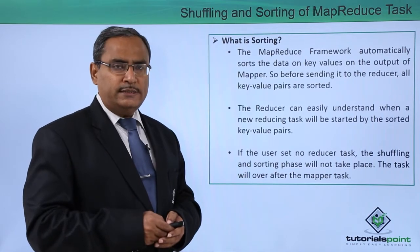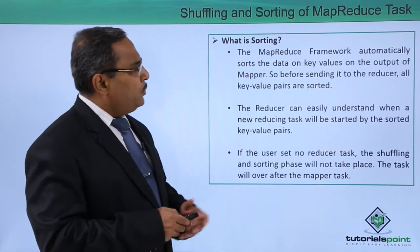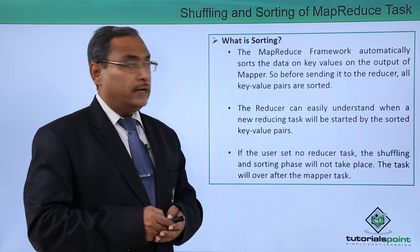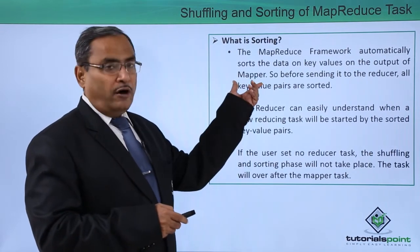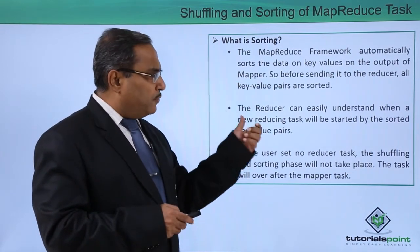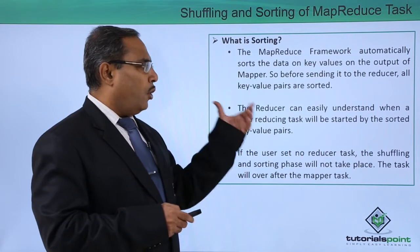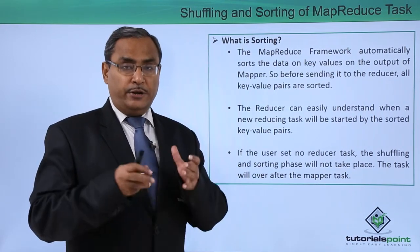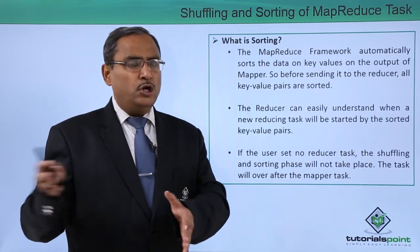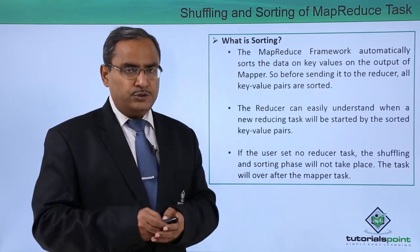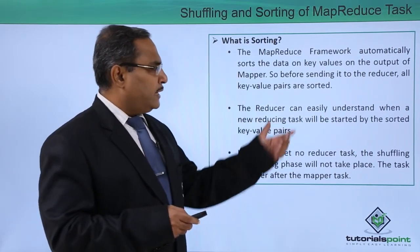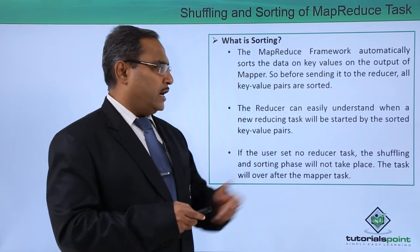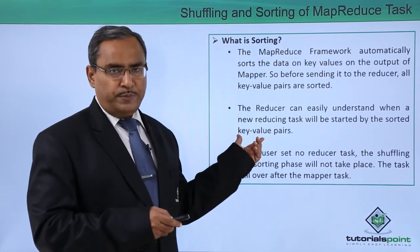Next, what is sorting? The MapReduce framework automatically sorts the data on the key values — on the output of the mapper. Before sending it to the reducer, all the key values will be sorted. As a result, the reducer will take less time to perform the reduce operation, and it can easily identify when a new reducing task starts from the sorted key-value pairs.